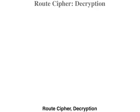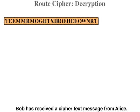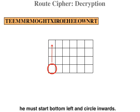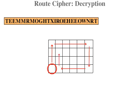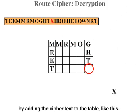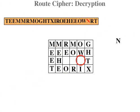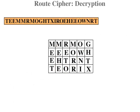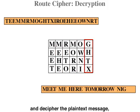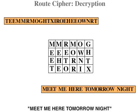Route cipher decryption. Bob has received a cipher text message from Alice. Bob knows that to decrypt the cipher text message he must start bottom left and circle inwards. Since Bob knows the key, he can decrypt the message by adding the cipher text to the table. He can then read the message in the columns and decipher the plain text message: 'Meet me here tomorrow night.'